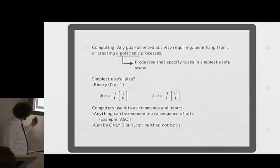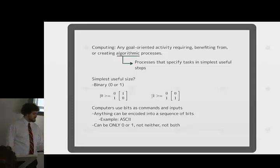So computing, according to Wikipedia, is any goal-oriented activity requiring or benefiting from creating algorithmic processes. An algorithm is a process that specifies tasks in simplest useful steps. So like a cookbook recipe is a good algorithm. Computers need really simple steps, and the simplest useful size is called binary, and that's a 0 or a 1. And those are matrix abstractions of what a 0 and a 1 are, and they'll make a little bit more sense when I get to quantum, because I'll change those.